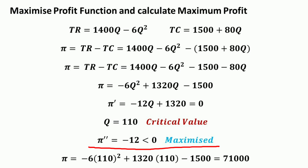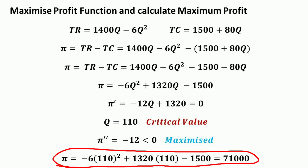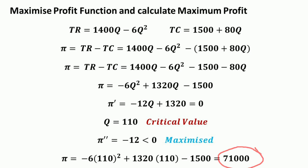To find the maximum profit, substitute q = 110 into the profit function: π = -6(110)² + 1320(110) - 1500 = -72,600 + 145,200 - 1,500 = 71,100 ≈ 71,000. So the maximum profit is 71,000.